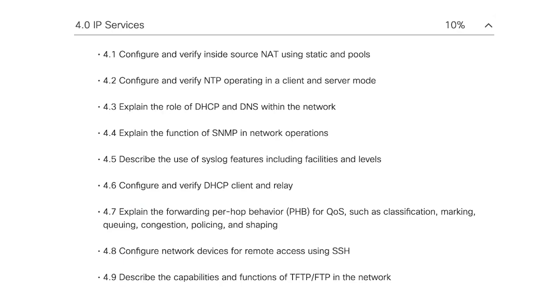Those are functions we refer to as network operations — actually operating the network. Some of these IP services are focused on operating the network in a secure fashion. Security topics show up across the blueprint because security isn't its own bolt-on thing. One task here is to configure network devices for remote access using SSH — secure shell. It's a secure way to manage your network devices, and it's a configure task, so it's not just how does it work, but how do you enable it on a router and what commands would you type in.